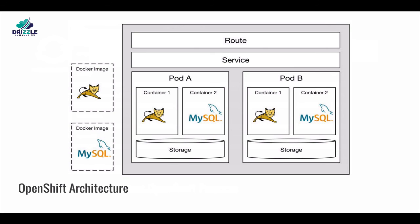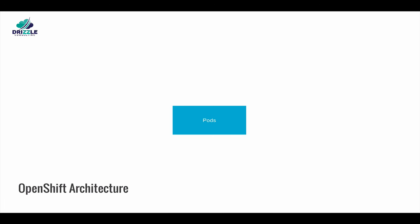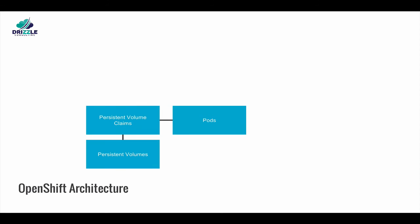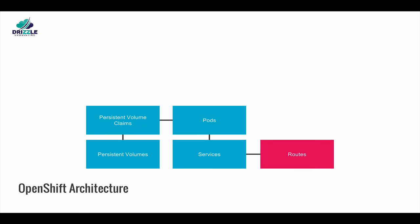To provide public access, a route needs to be created. Routes act as a load balancer across pods and provide DNS that gives an addressable name for the application to be accessed. Pods are deployed on nodes and share node resources like persistent storage volumes. Pods are made available via services, and also to the external world outside the cluster using routes — the external DNS entry that is created to point to the service so it can be accessed.